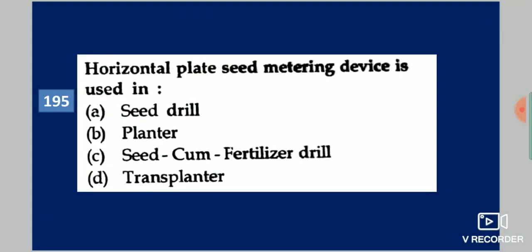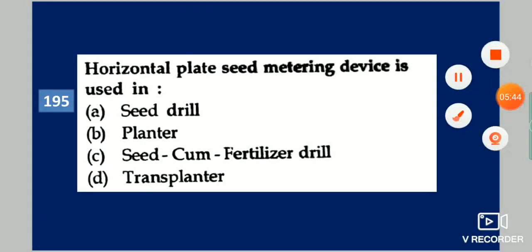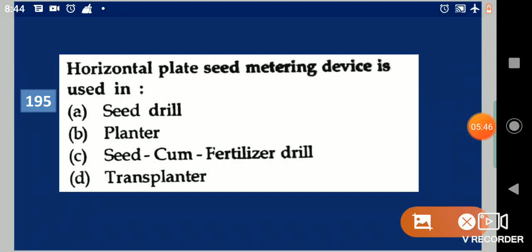Next question: Horizontal plate seed metering device is used in dash. Your options are: seed drill, planter, seed cum fertilizer drill, transplanter. Your answer is planter.